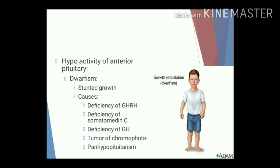Hypoactivity of the anterior pituitary causes dwarfism, characterized by short stature or stunted growth. Causes include deficiency of growth hormone releasing hormone from the hypothalamus, deficiency of somatomedin C (required for action of growth hormone), deficiency of growth hormone itself due to tumour of the chromophobes compressing acidophilic cells, and panhypopituitarism in which all pituitary hormone secretion is reduced.